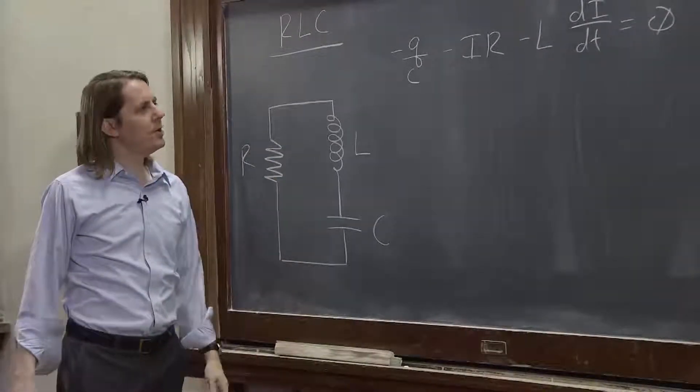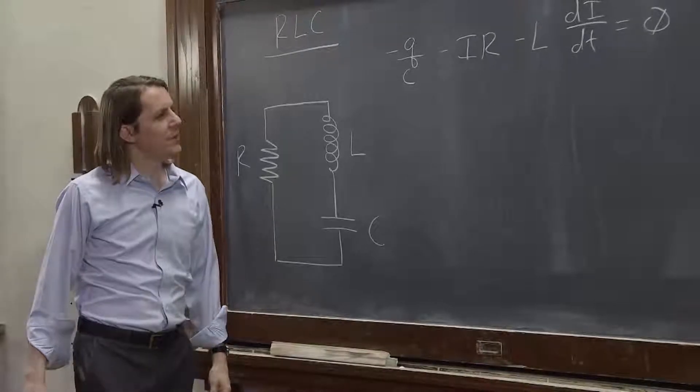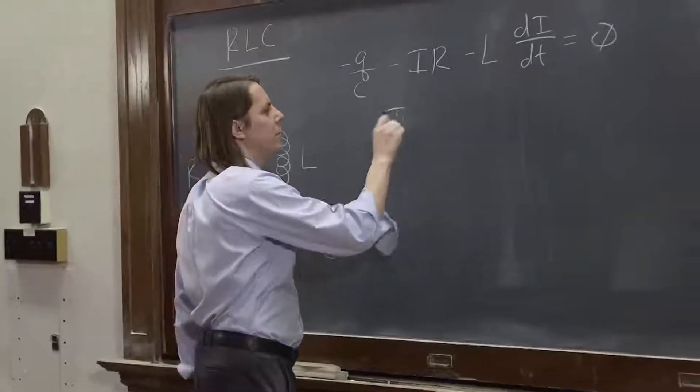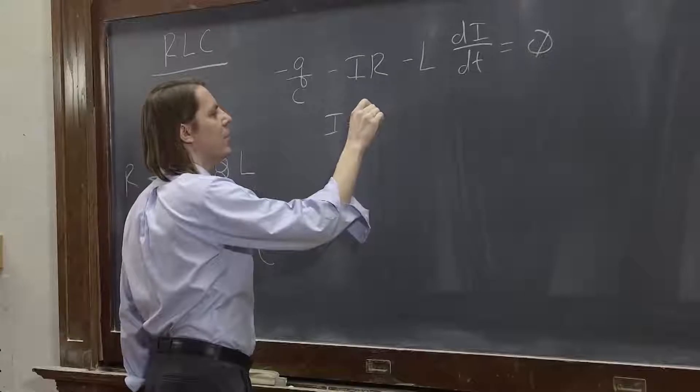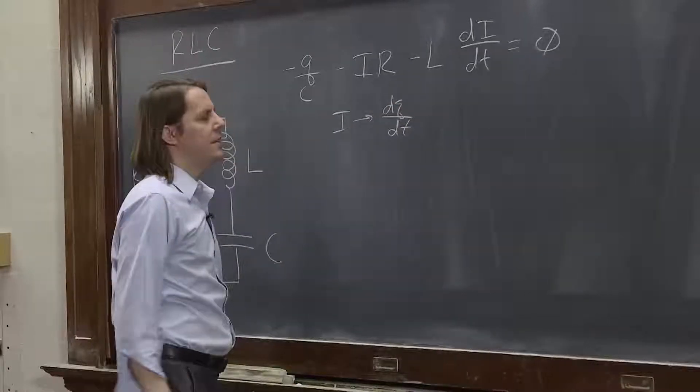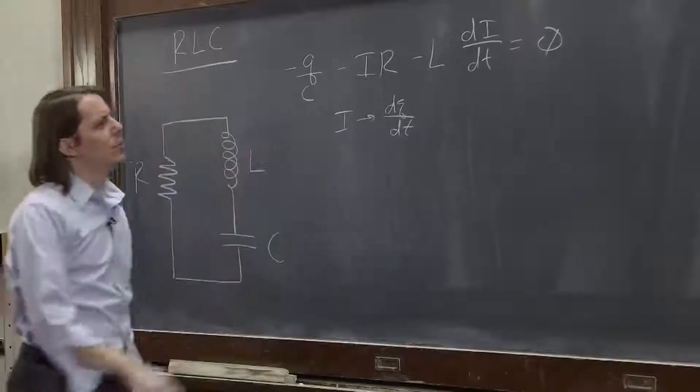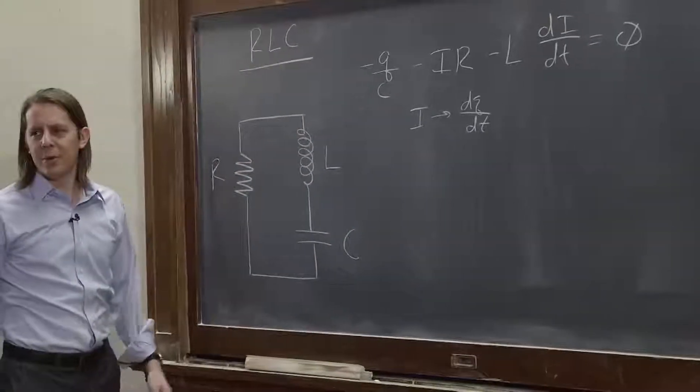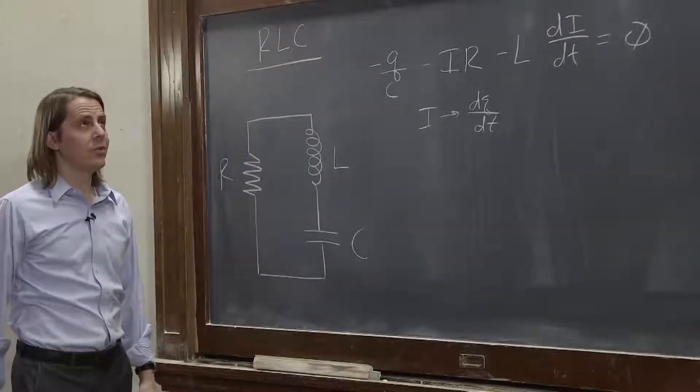So, more complicated equation. What we want to do is remember we want to switch to charge. It's usually the best thing. So we take our currents to dQ/dt, and also it's usually best when you're dealing with a differential equation to isolate your highest order derivative.